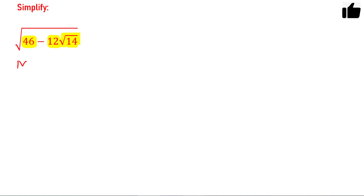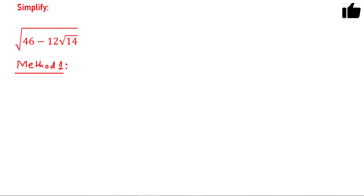Let us discuss Method 1. In this method, the idea is to write the whole number inside the square root as a perfect square of some number. For this purpose, I will try to factorize 12 times square root of 14 and see how we can make it a perfect square.